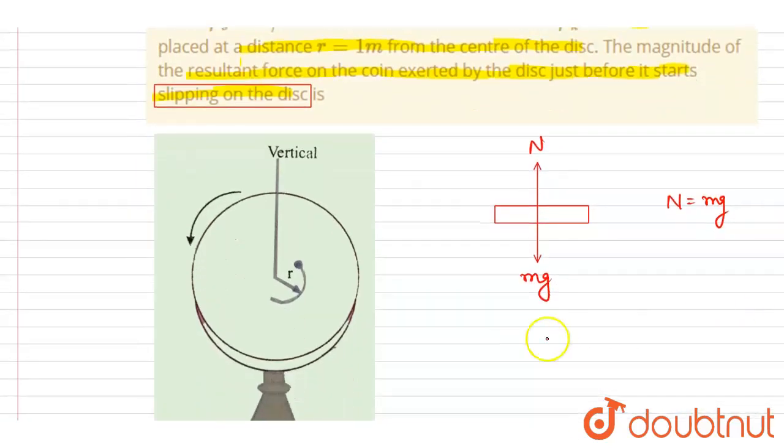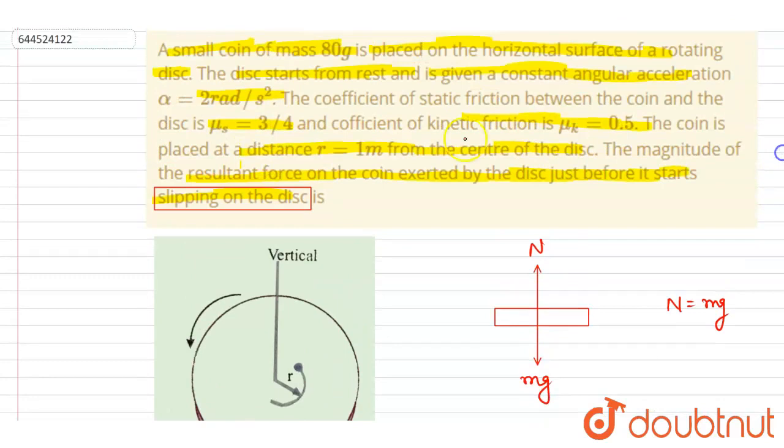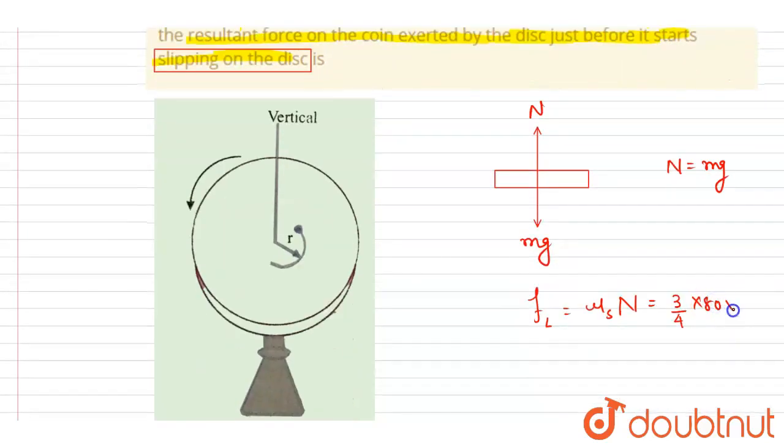Now if you see the limiting friction that could act here, the mu is given, m is also given, right? You can just put the value. So it is 3/4 into mass is 80 gram